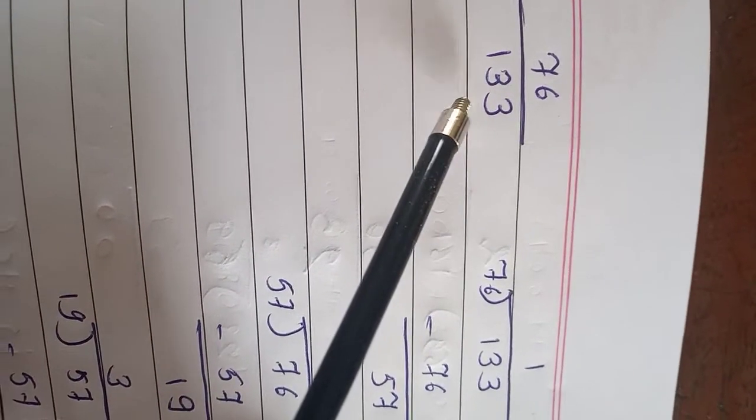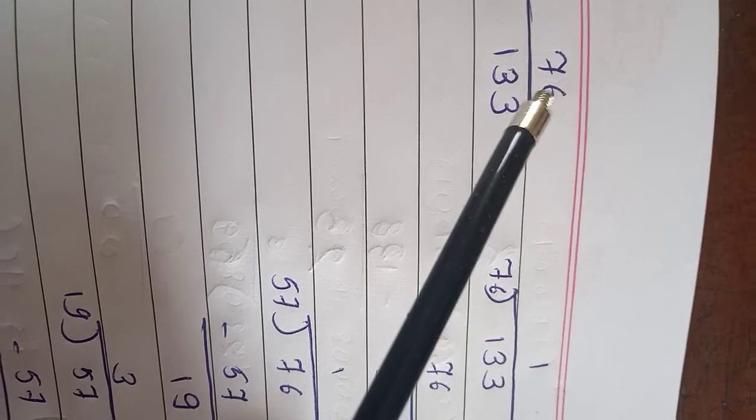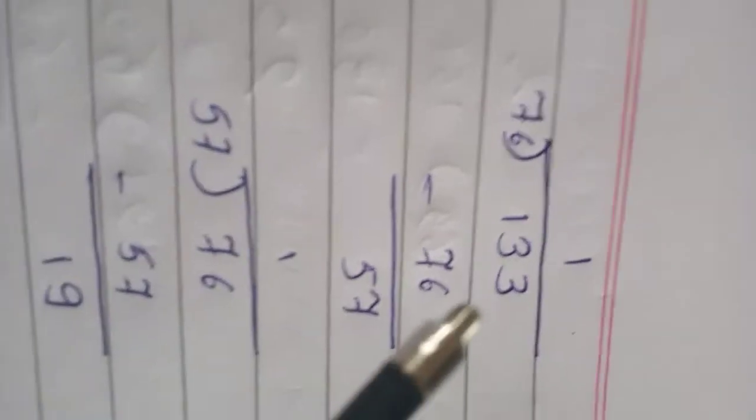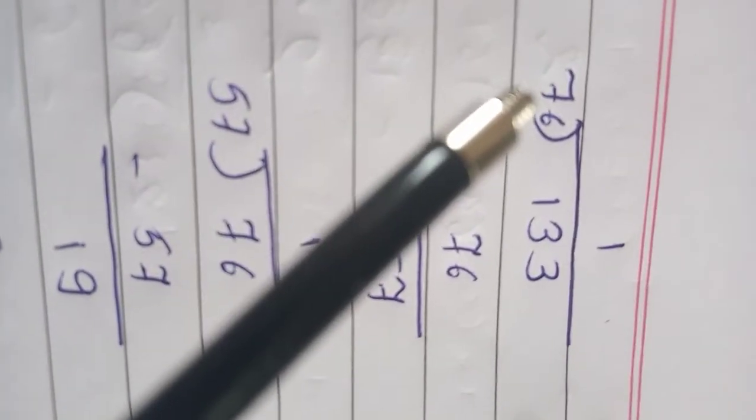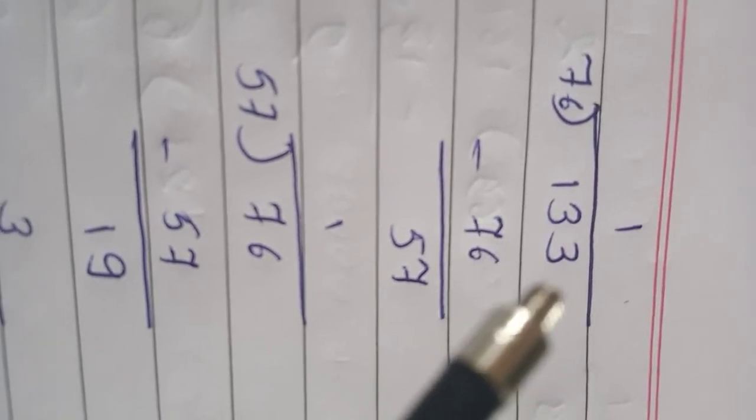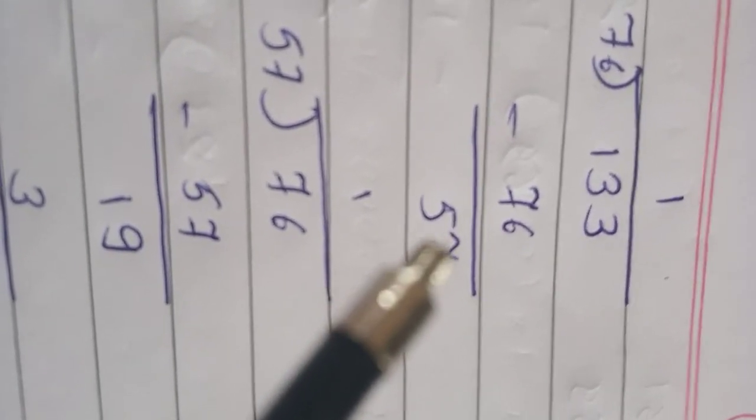Now we move to the next question. That is 76 upon 133. See here, 76 is a smaller number. So we are going to divide 133 by 76. So 133 divided by 76. 76 ones are 76. 133 minus 76 is 57.